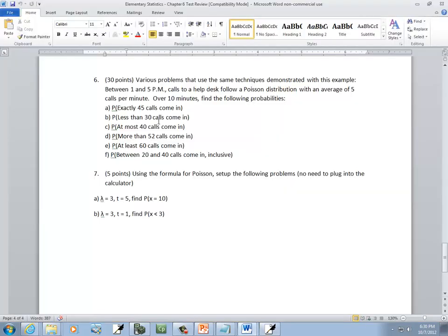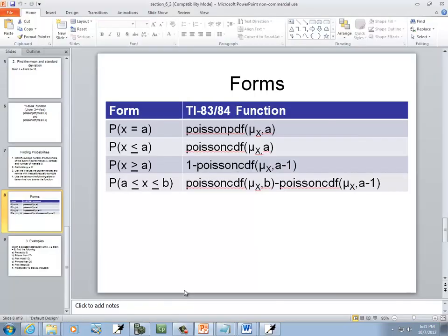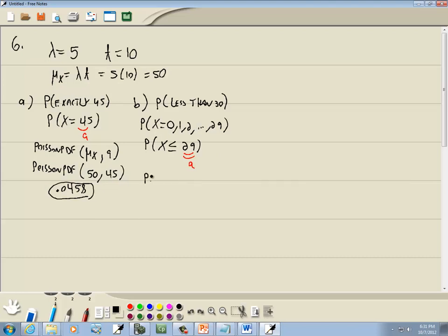Now B. Probability less than 30. So less than 30. We want to write down first the x values that it entails. That's 0, 1, 2, all the way up to less than 30 means it doesn't include 30, so it would be 29. So this is saying probability that x is less than or equal to 29. Well, that's going to be our a. And our format matches the second one, probability x is less than or equal to a. So we use Poisson CDF, mu sub x, a.